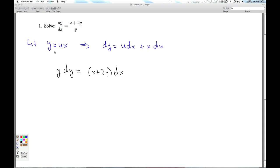becomes in the land of u, or let's see, y is ux. So this y, I'm going to replace with ux. The dy is u dx plus x du. This is x plus 2y, but y is ux dx.